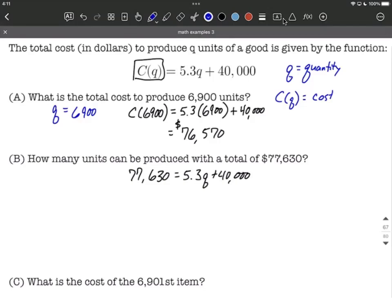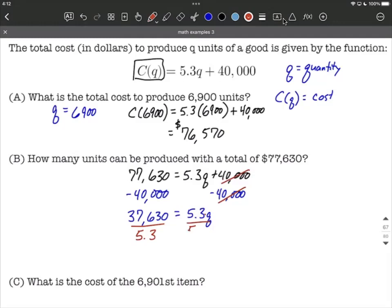This is a linear equation. We want to get the 5.3Q on one side by itself first. I want to move the 40,000 over using subtraction, so subtracting 40,000 from each side will give us 37,630 on the left-hand side and 5.3Q on the right-hand side. What remains is to get rid of that 5.3 in front of the Q. We want to divide both sides by 5.3. On the right-hand side, we'll have Q, our quantity, which is 7,100.